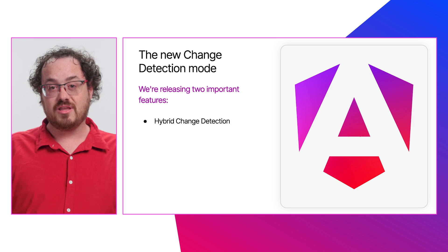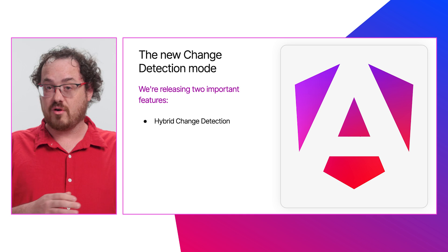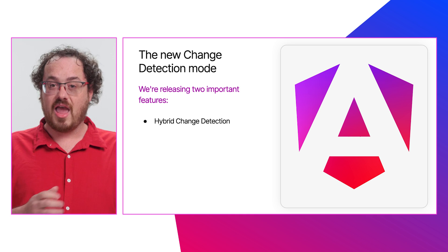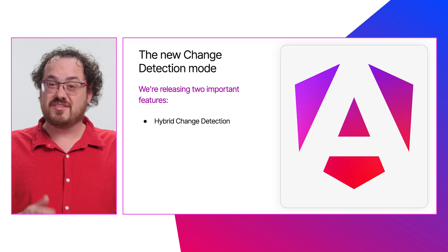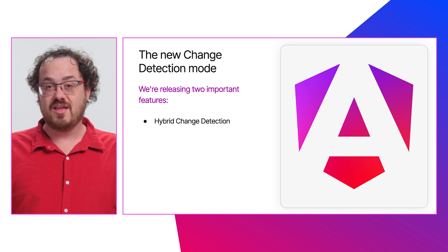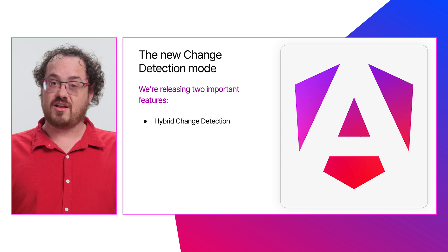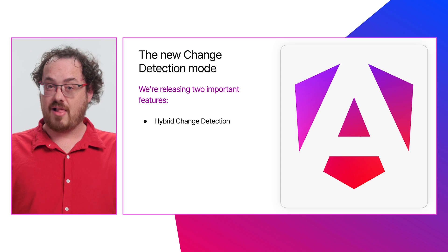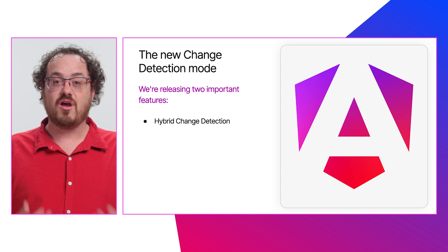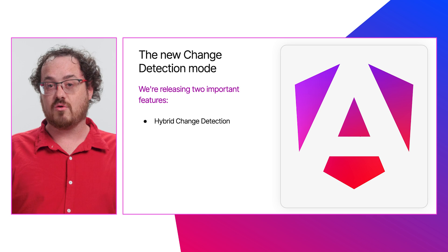In this mode, even if zone.js doesn't patch an API, or if changes are made outside of the Angular zone, Angular will still listen to signals and other notifications about changes and schedule change detection. Hybrid change detection will allow developers, especially library authors, to write code that works regardless of whether zone.js is used or not.